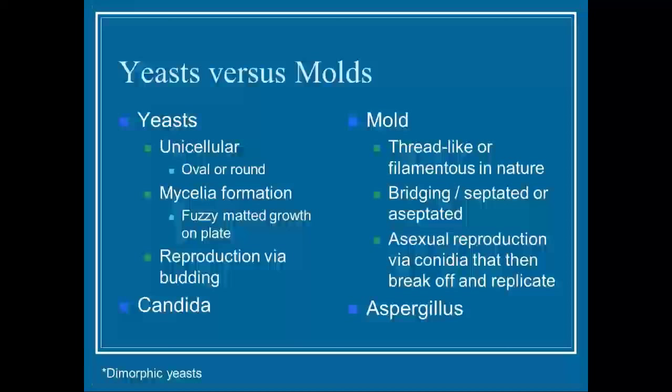A few words about yeast versus mold. Yeast are unicellular, oval or round, with a mycelial formation that's a fuzzy mat on the plate, and they reproduce by budding — your stereotypical example being candida. Mold are thread-like or filamentous, can be septated or aseptated, and traditionally reproduce asexually via conidia that break off and replicate. The stereotypical mold is aspergillus. There is also notation about dimorphic fungi that fluctuate between different forms.